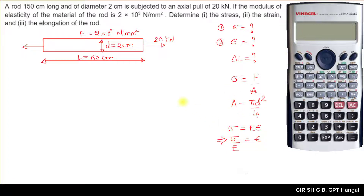Once we have sigma, we substitute into that equation to get the value of strain — that is the second quantity. For the third quantity, the elongation of the rod: using the strain equation, strain equals delta L divided by L. Multiplying both sides by L (which is 150 cm), we get delta L = epsilon × L.